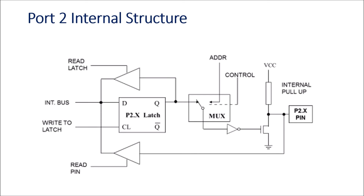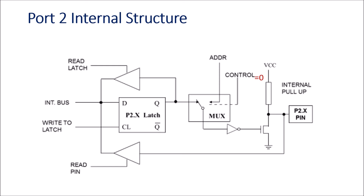Port 2 internal structure: port 2 can be used as a simple input-output port or as the higher 8-bit address bus, A8 to A15. Because of these different functions, a multiplexer arrangement is used. When the control signal is 0, the gate of the switch is connected to the Q output of the flip-flop and the port acts as a simple I/O port. When control is 1, the MUX connects the gate to the address terminal, and the port acts as a higher-order address bus. All other operations are the same as port 0 and port 1.